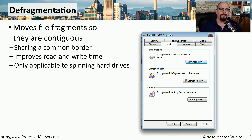When a computer is saving files to a hard drive, it's not necessarily saving all pieces of that file in one place. It's very common for files to be cut into smaller pieces and saved in different places on the drive. This means if we need to access that file later, we need to go to each section of that drive where the pieces are stored and gather all of those details before we can read the entire file.